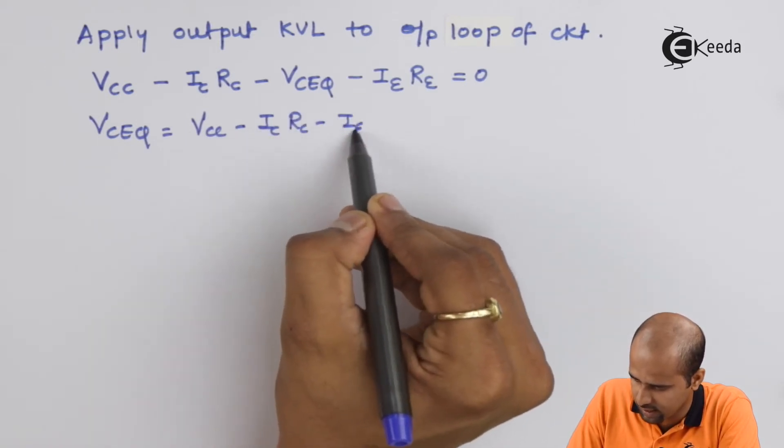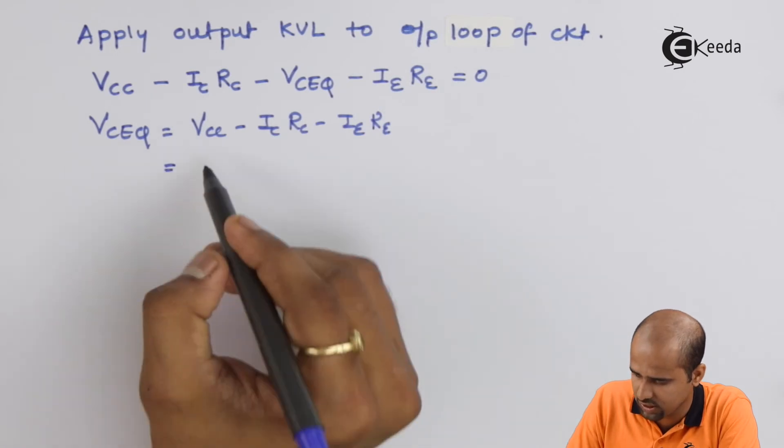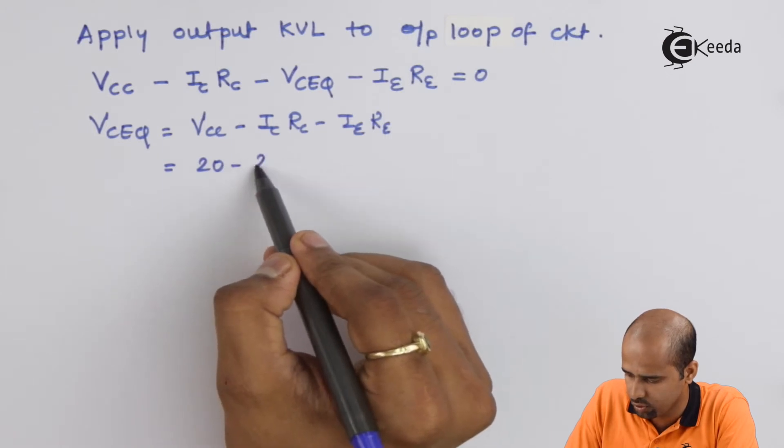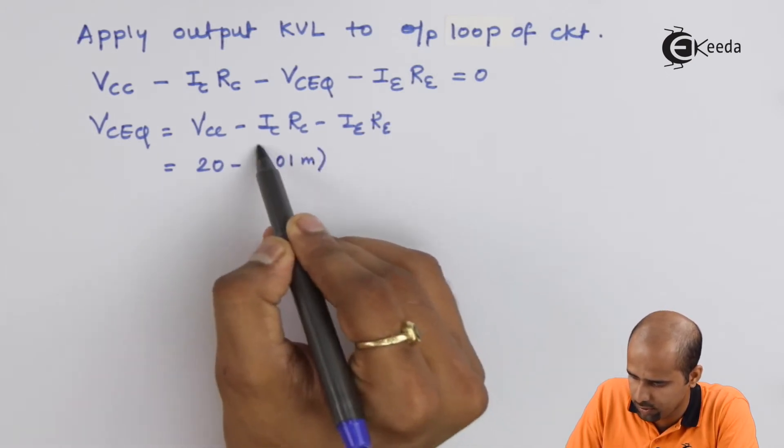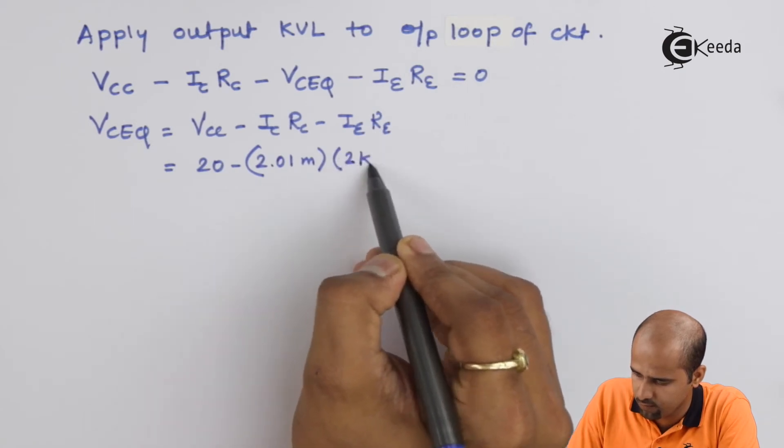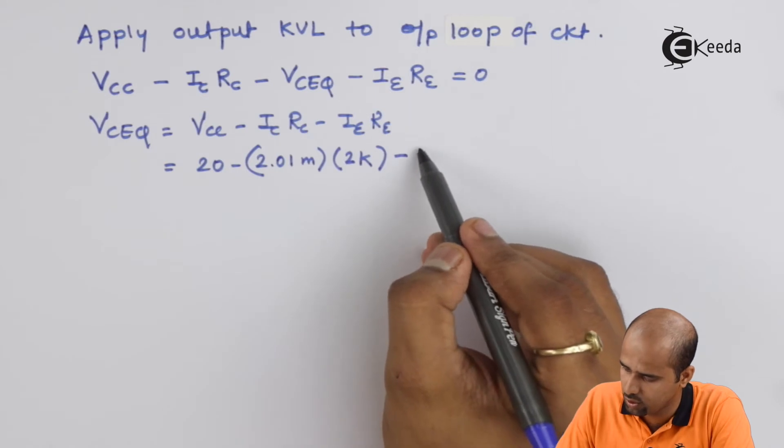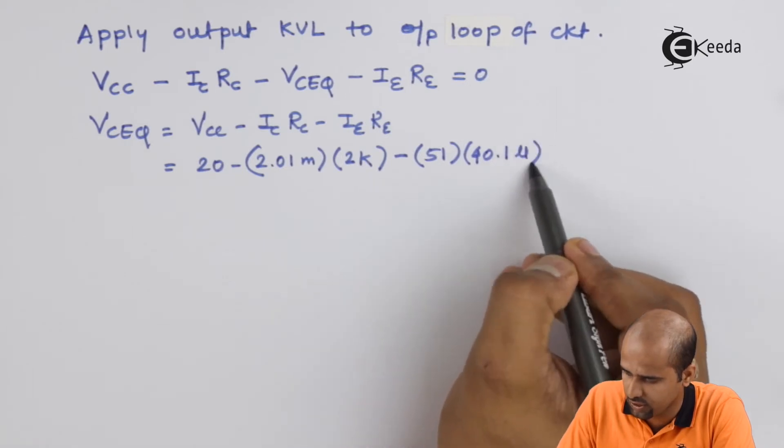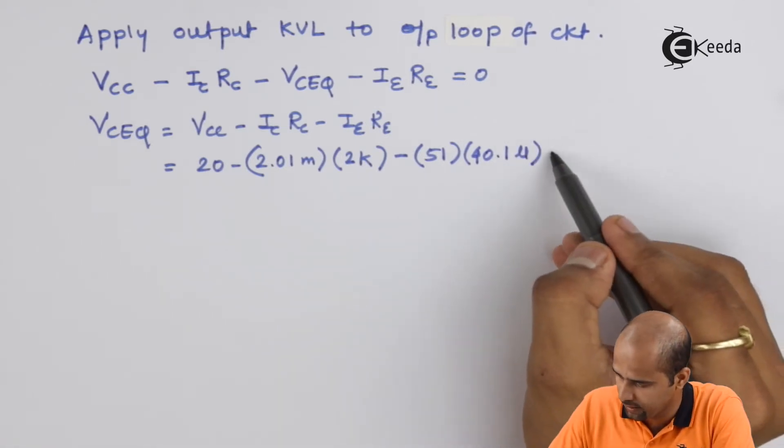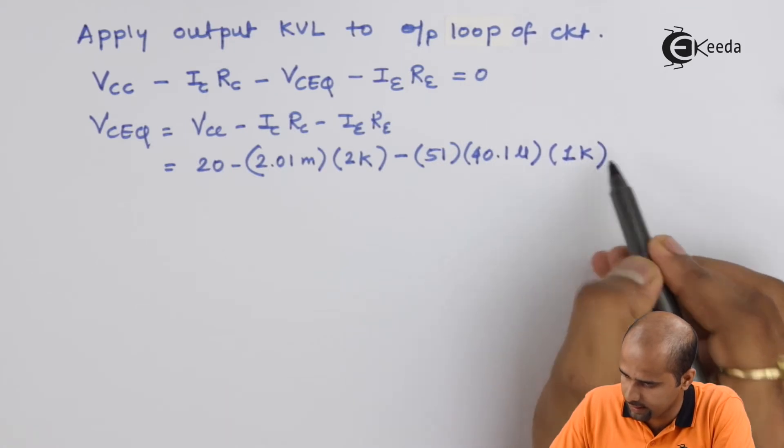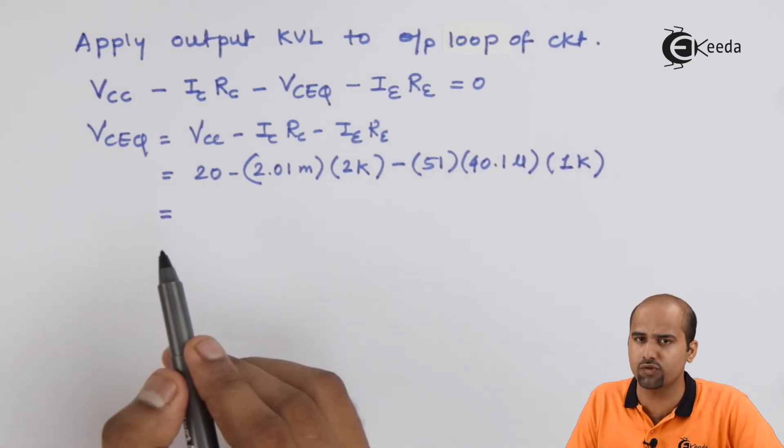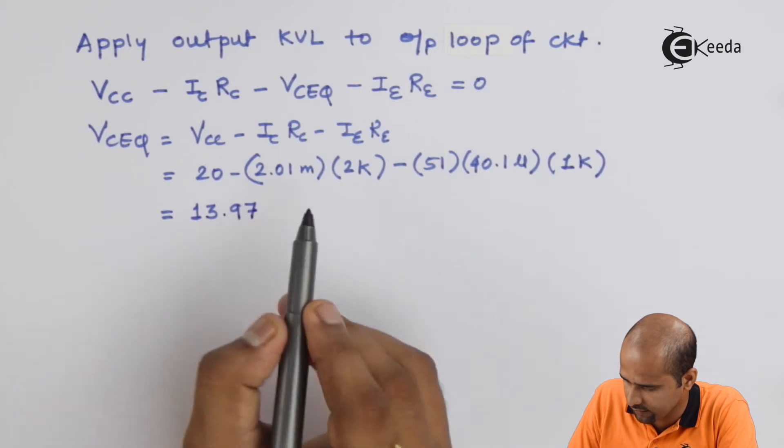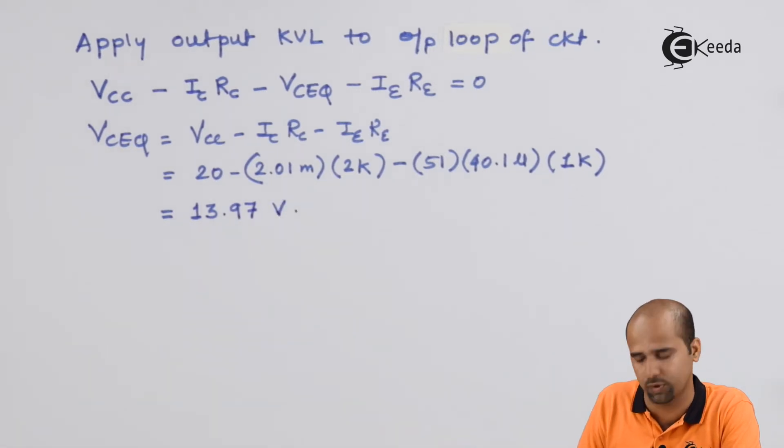We will put that value to find out the value of VCEQ which is equal to VCC minus IC into RC minus IE into RE, which is equal to 20 minus IC is 2.01 milliampere. RC value is 2K. IE value is nothing but 51 multiplied by 40.1 micro, that is 1 plus beta times IB multiplied by IRE that is 1K. This gives you the value of VCEQ as 13.97 volts.